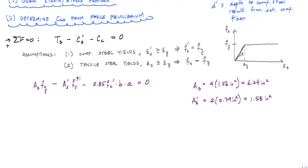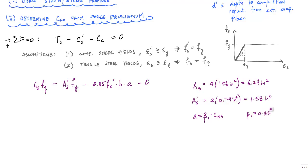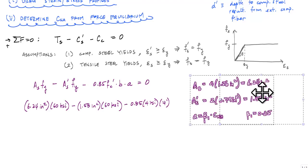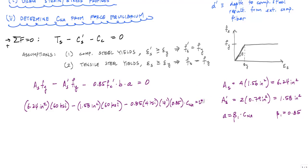Since we assumed the compression steel yielded, Fs prime is also just Fy. Recall that from the Whitney stress block, A equals beta1 times CNA, where beta1 is a modifier depending on the ultimate compressive strength of concrete. For 4 KSI concrete, beta1 equals 0.85. We can now plug and chug and solve for CNA, giving a neutral axis depth of 6.91 inches.